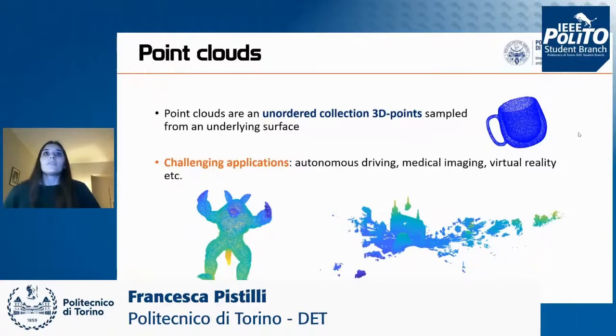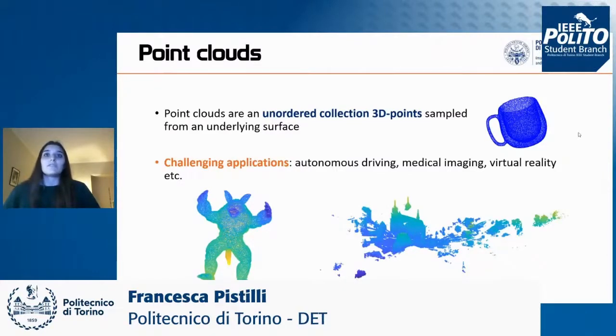Point clouds are a geometric data type that consists of an unordered set of three-dimensional points that may represent objects or scenes.